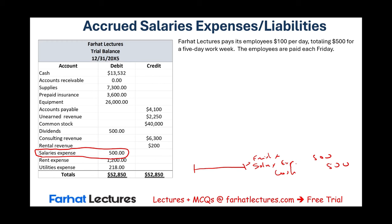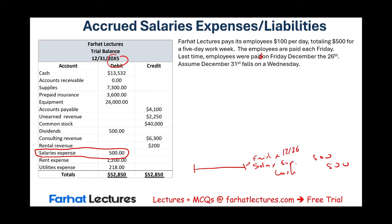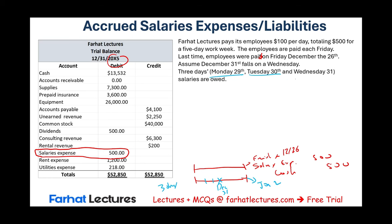Employees were last paid on Friday, December 26th — the first and last time for that year. Assume December 31st falls on a Wednesday. So the Friday was December 26th, and the following week the year ends on Wednesday, December 31st. The employees came back to work Monday, Tuesday, and Wednesday — they worked for three days. I will not pay them till January 2nd. So salaries are owed for Monday the 29th, Tuesday the 30th, and Wednesday the 31st.